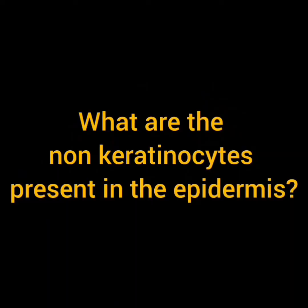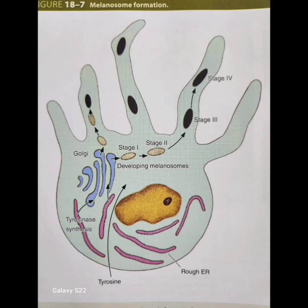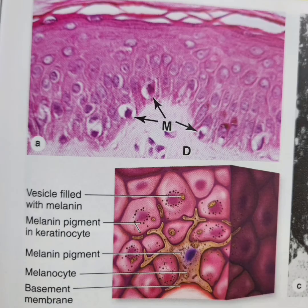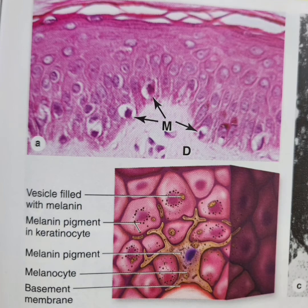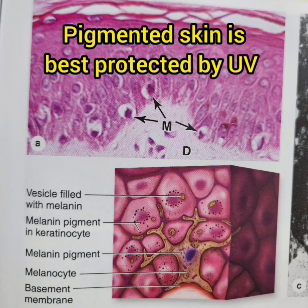Apart from keratinocytes, there are a few other cells present in the epidermis: pigment-forming melanocytes, antigen-presenting Langerhans cells, tactile sensory Merkel cells, and free nerve endings. Melanocytes show finger-like processes or dendrites through which melanin pigment is deposited into adjacent cells through vesicles. This melanin covers the sun-exposed end of the nucleus and prevents ultraviolet rays from causing mutations in DNA. The more the pigment, the better the protection.